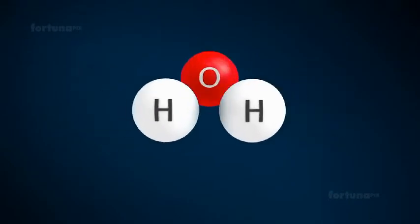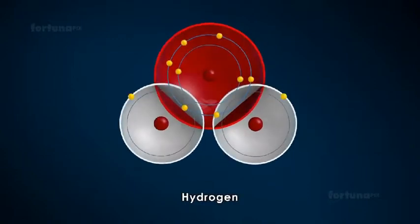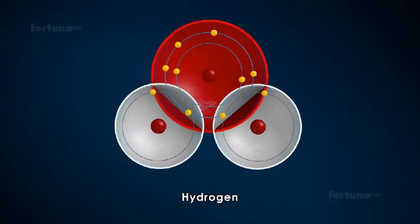Hydrogen, for example, can combine with oxygen atoms to form water. Because hydrogen has a single electron available for bond formation, its valency will be 1.